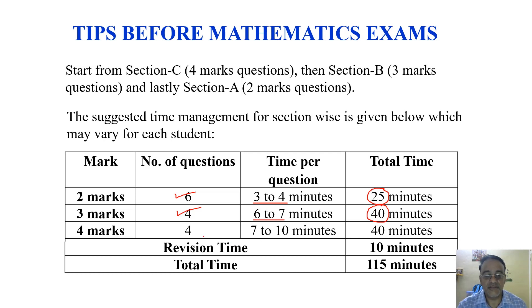The last section is section C which has four questions, two case study questions. I suggest the time is seven to ten minutes, so maximum 40 minutes. So 40 plus 40 plus 25 will be 105 minutes and plus 10 minutes revision time, so the paper should be completed in 115 minutes.